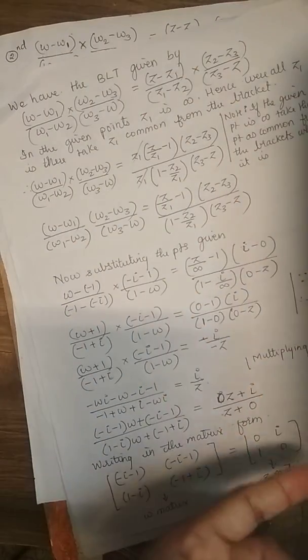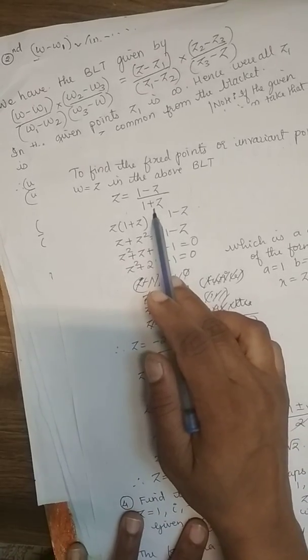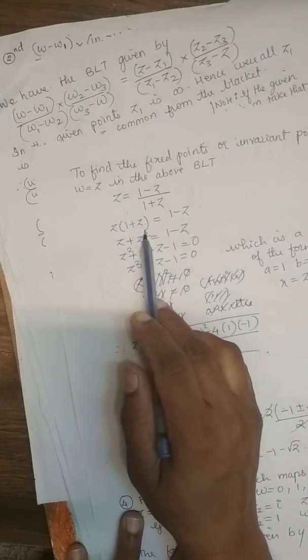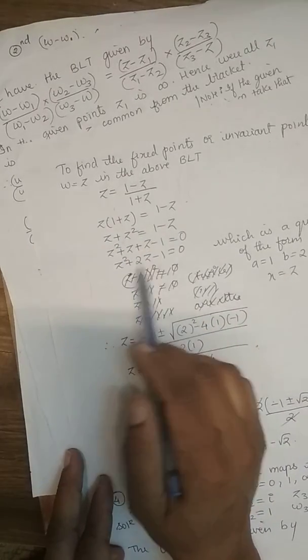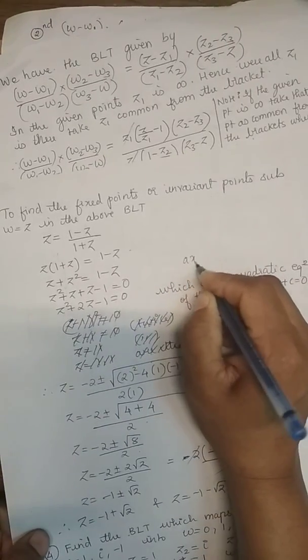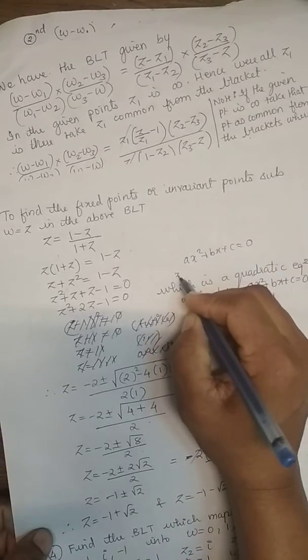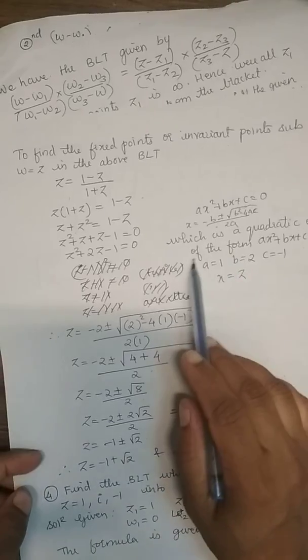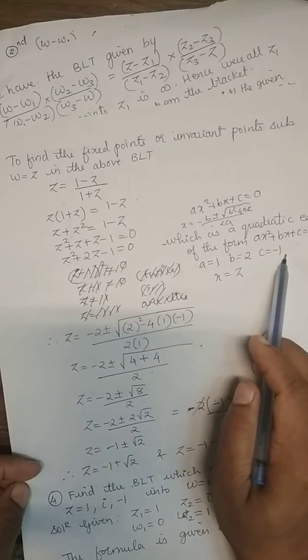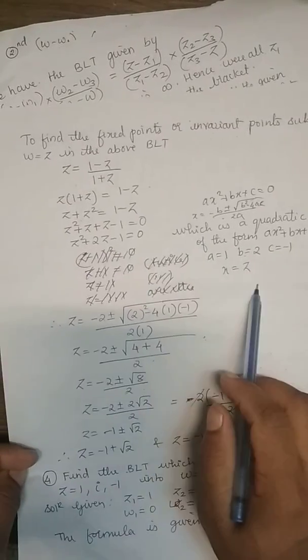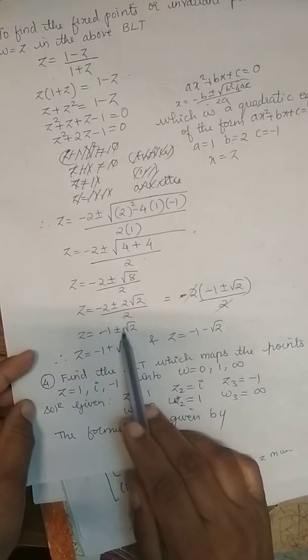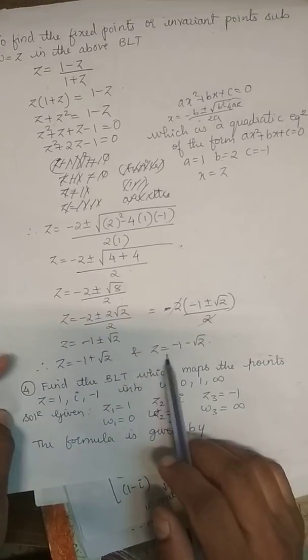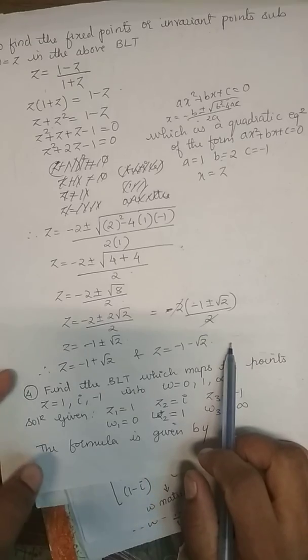To find the fixed points, substitute W equals Z: Z equals (1 minus Z)/(1 plus Z). Cross-multiplying gives Z(1 plus Z) equals 1 minus Z, which expands to a quadratic Z² plus 2Z minus 1 equals 0. Using the quadratic formula with A=1, B=2, C=minus 1, the fixed points are Z equals minus 1 plus root 2 and Z equals minus 1 minus root 2.